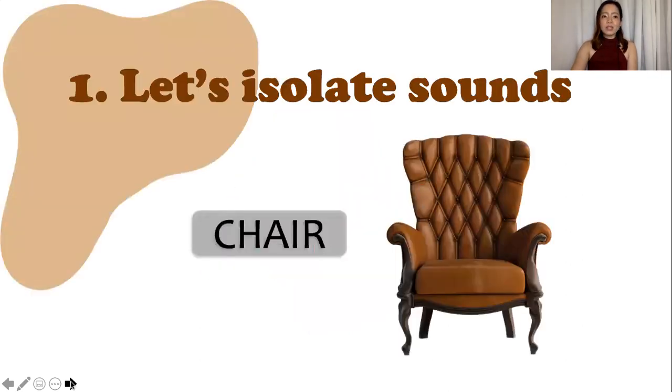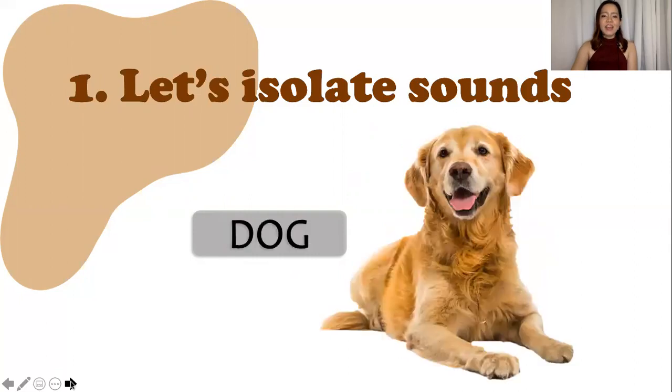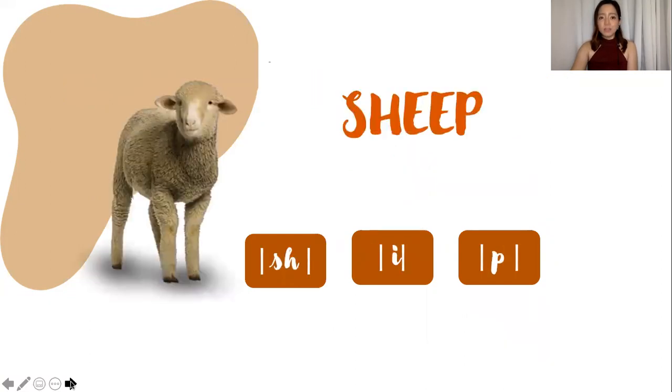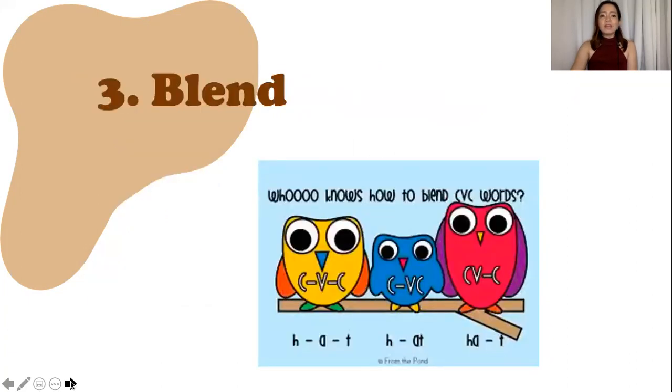So, first, we could isolate sounds. Say the word chair. What's the first sound that you hear in the word chair? Ch. Correct. Another one. Say the word dog. What's the sound that you hear at the end? G. Correct. Next, aside from isolating, we can segment phonemes. So, for example, let's count the sounds in the word cat: K, A, T. And, how about for sheep? Sh, I. This one is trickier, right? Because even though sheep has four letters, the sounds are only three. Remember, phonemic awareness is the sounds, not the letters.